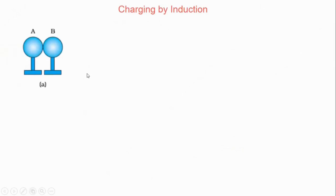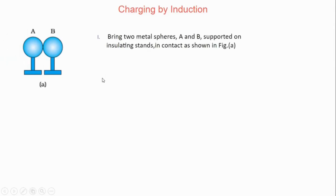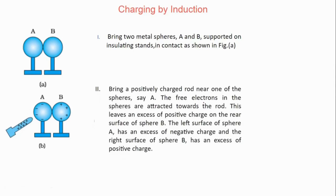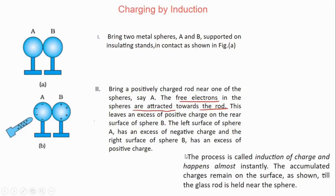The second method is charging by induction. In charging by induction, we take two metallic spheres A and B brought close to each other. We bring a charged rod — already positively charged. Because of this positively charged rod, the free electrons in the sphere are attracted towards the rod. The free electrons of sphere A are attracted towards the positive charge, and the positive charges of B get accumulated on the rear side. This is the method of induction of charges and it happens almost instantly — the accumulated charges remain on the surface.